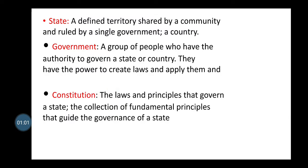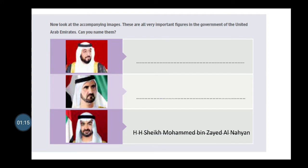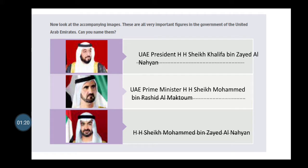Each state or country has its own government and its own constitution. If you look at those pictures, all of them are very important figures in the UAE government. Picture number one is His Highness Sheikh Khalifa bin Zayed al-Nahyan, the UAE President.